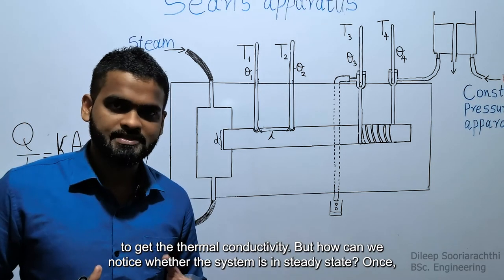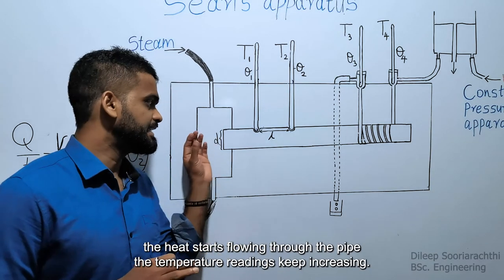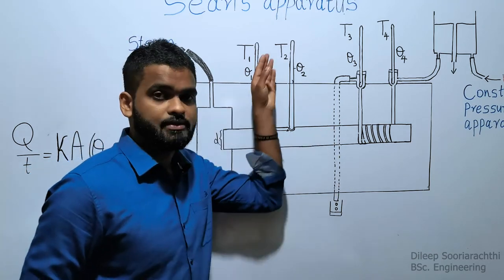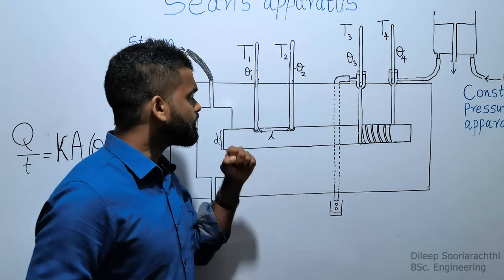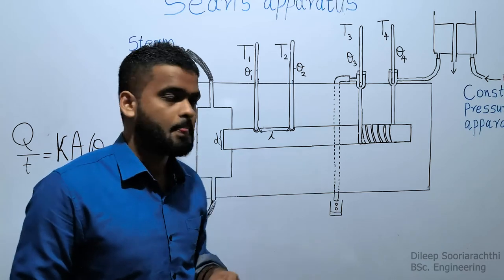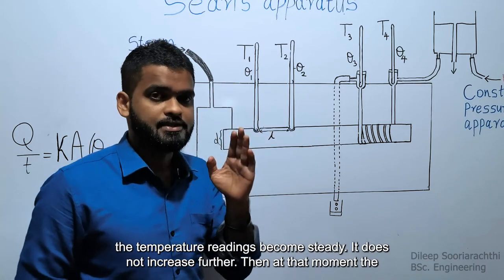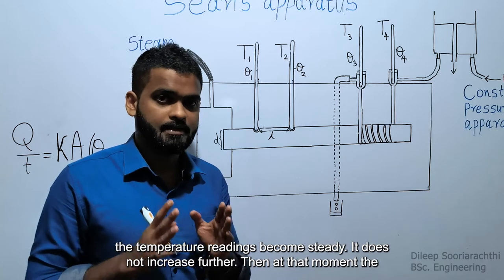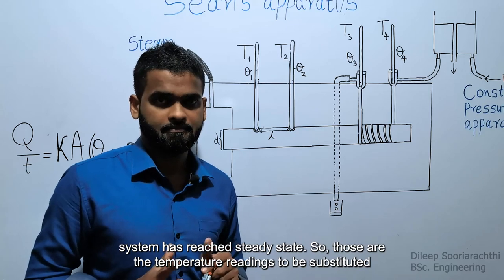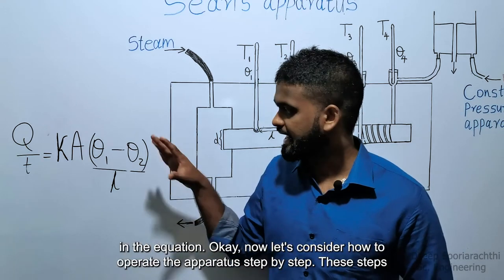But how can we notice whether the system is in steady state? Once the heat starts flowing through the pipe, the temperature readings keep increasing. Then after a while, like 10 or 15 minutes, the temperature readings become steady and do not increase further. At that moment, the system has reached steady state, and those are the temperature readings to be substituted in the equation.